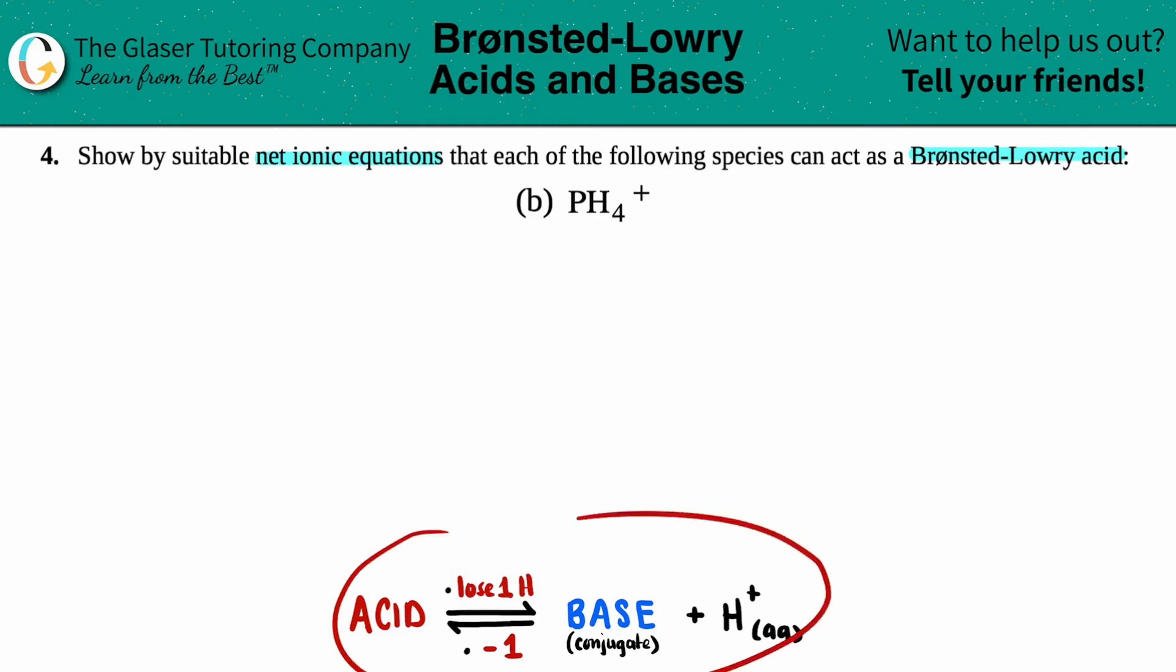Now I wrote down a little bit down at the bottom, the little quick trick that you guys might want to memorize in order to go from an acid to a base. There's only two things that you have to do. An acid will always lose one hydrogen because it's going to donate it, and the overall charge is being deducted by one. So let's try it out.